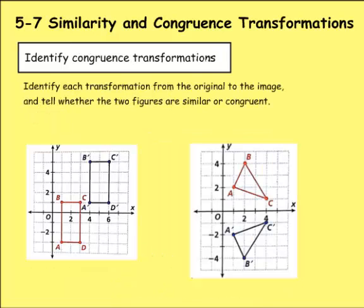So now let's move on to these ones. Same task: identify the transformation and then tell whether it's similar or congruent. Here I see that A was moved 3 to the right and 4 up.